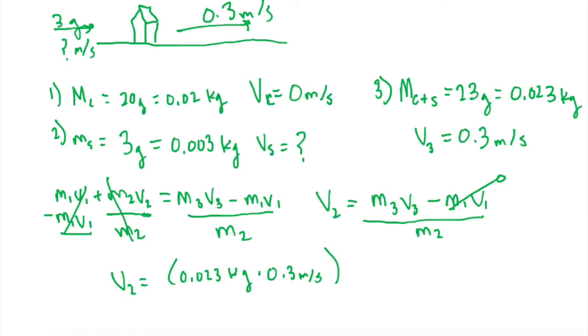Now we divide by M2, which is 0.003 kilograms. When we do that, we get 2.3 meters per second.